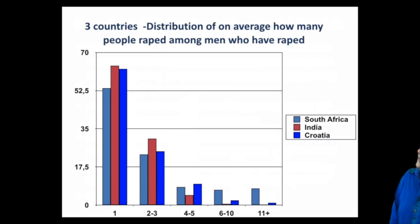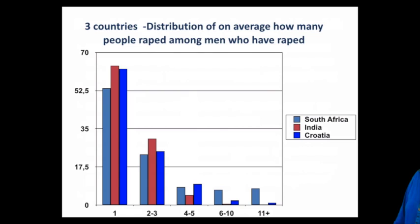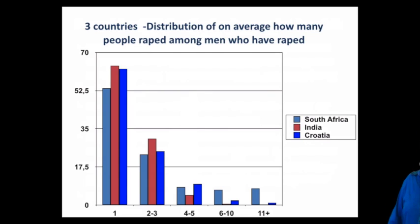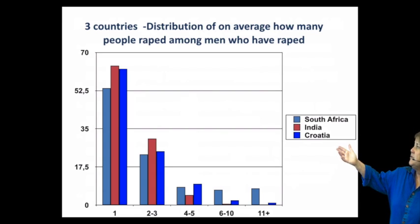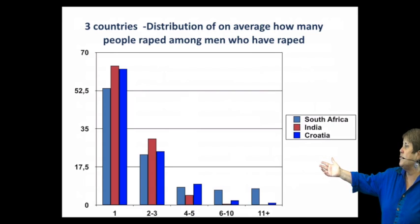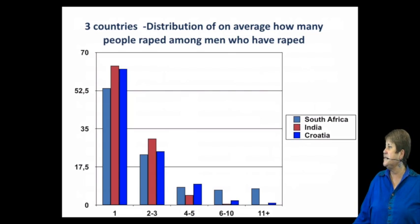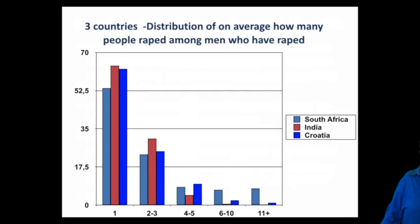Looking at those same three countries and the distribution of how many people have been raped among men who have raped — reported by men themselves — by far the most common is one person raped. However, men also report having raped two to three people, four to five, six to ten, with a fairly large amount reporting more than one victim — in other words, gang rape.